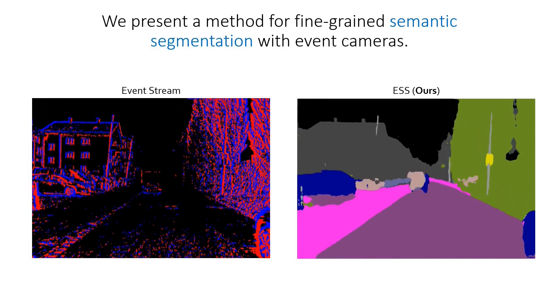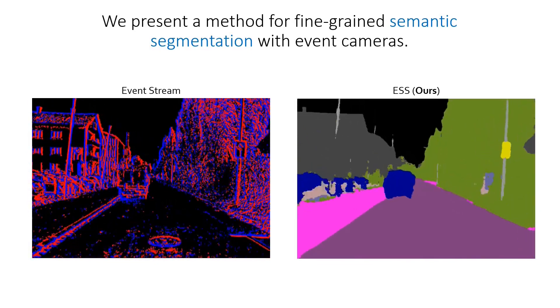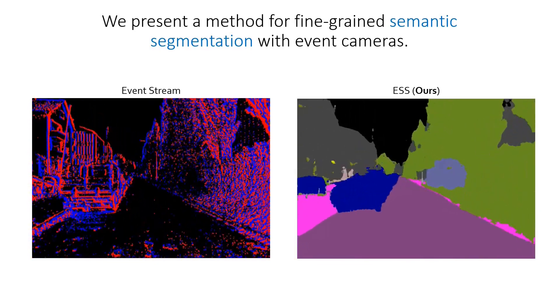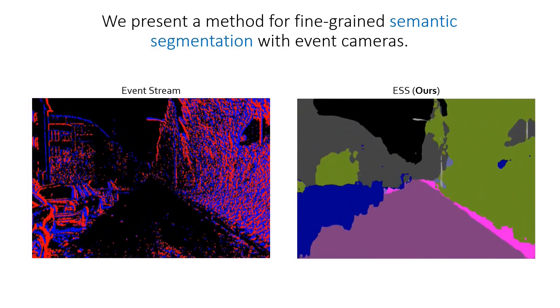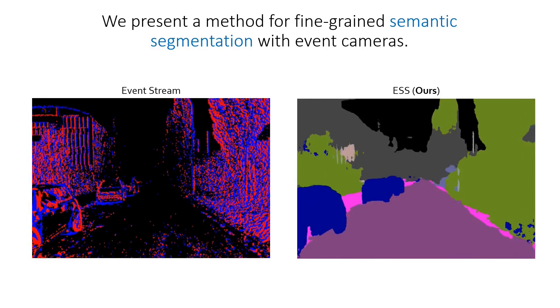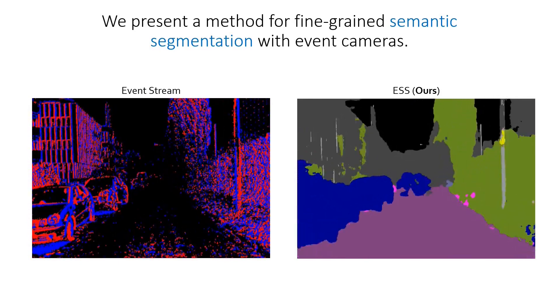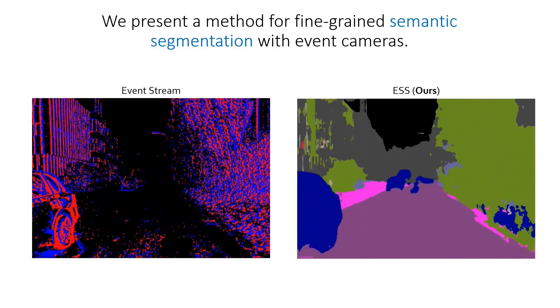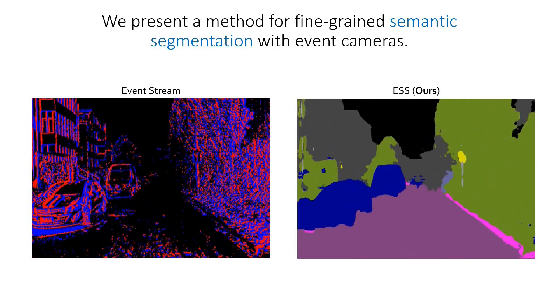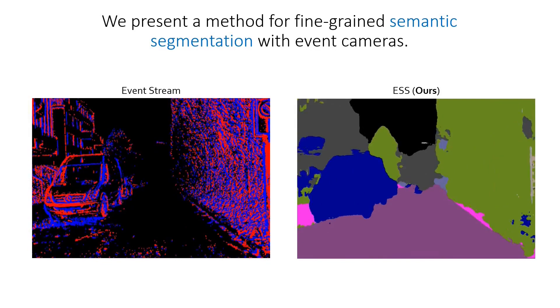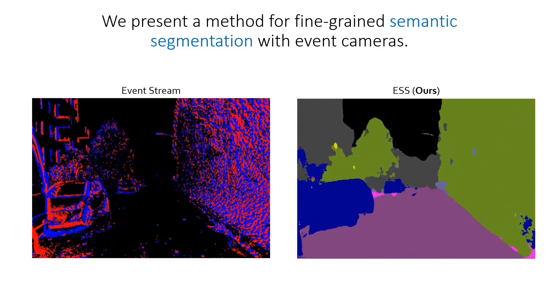In this work we present a novel method for fine-grained semantic segmentation with event cameras. Crucially, our method works with unlabeled event data by learning directly from labeled still images.